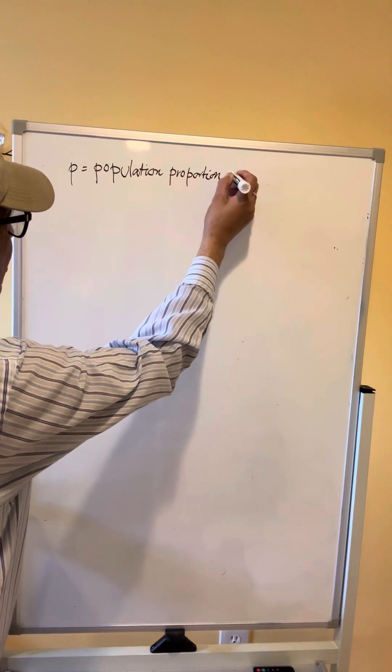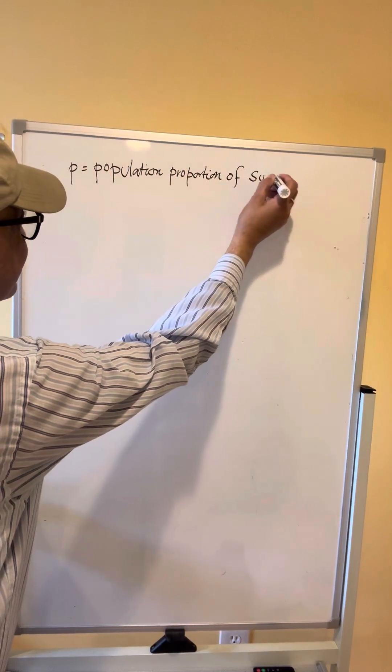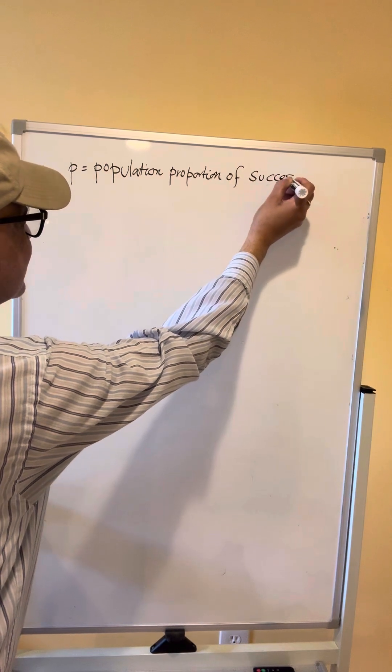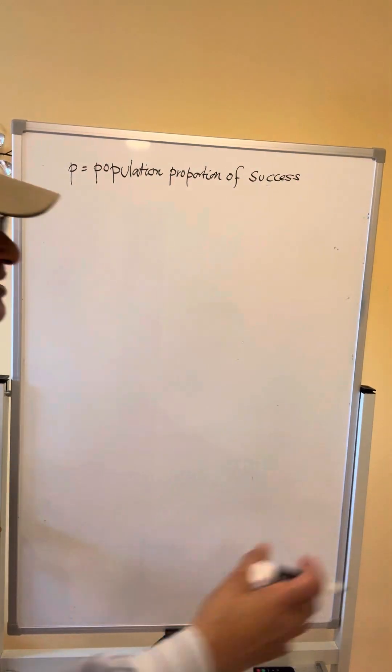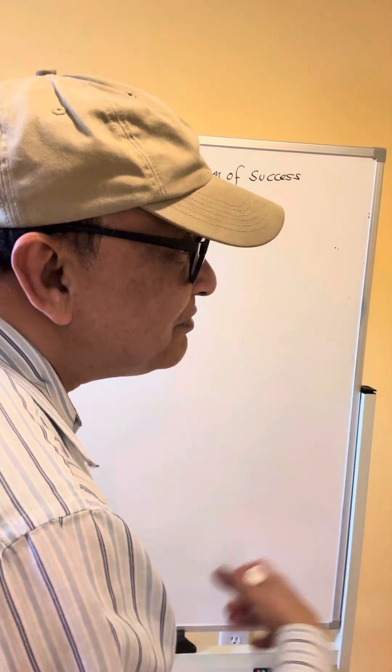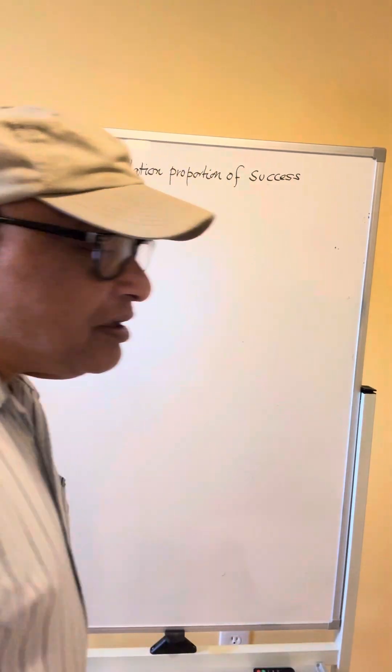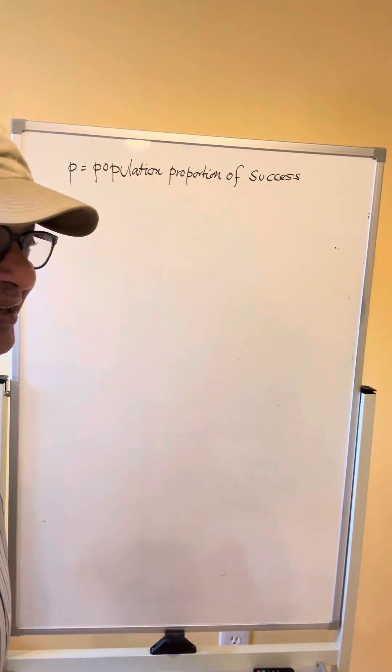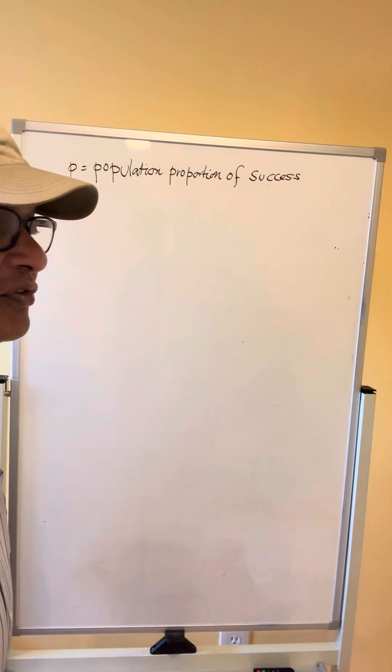Now, what do I mean by success? Success means the percent, or P means the percent of the population that possesses a particular characteristic I am looking for,